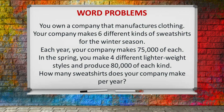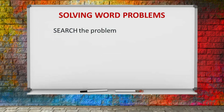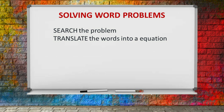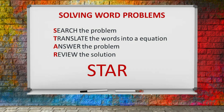You own a company that manufactures clothing. Your company makes six different kinds of sweatshirts for the winter season — each year, 75,000 of each. In the spring, you make four different lighter weight styles and produce 80,000 of each kind. How many sweatshirts does your company make per year? Here's one strategy: first, Search the word problem; then Translate the words into an equation or picture form; then Answer the problem; and lastly, Review the solution. The first initial in each of those phrases spells the word STAR.